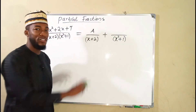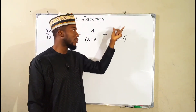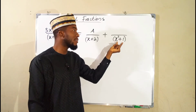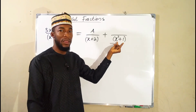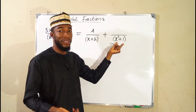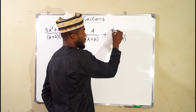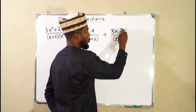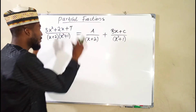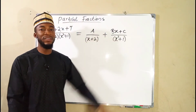Then plus the other fraction. This is a quadratic factor, therefore its numerator is going to be a polynomial of one degree less than this — a polynomial of degree one. So we have something like bx plus c, where b and c are constants. Having obtained this, we are going to find the values of a, b, and c.